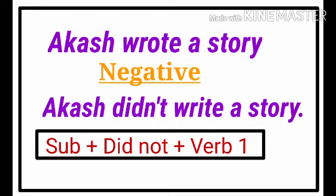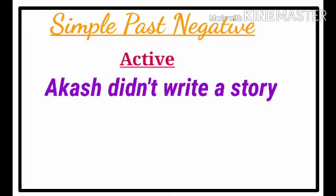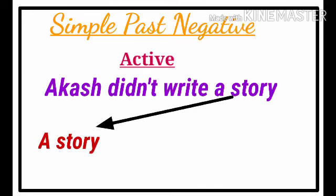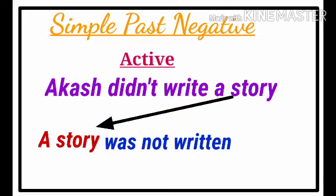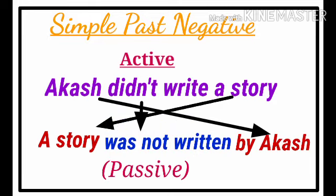'Akash didn't write a story.' How do we change this to passive? Start with 'a story' — 'didn't' changes to 'was not.' So: 'A story was not written by Akash.' If it is plural — 'Akash didn't write stories' — we use 'were' instead of 'was': 'Stories were not written by Akash.'